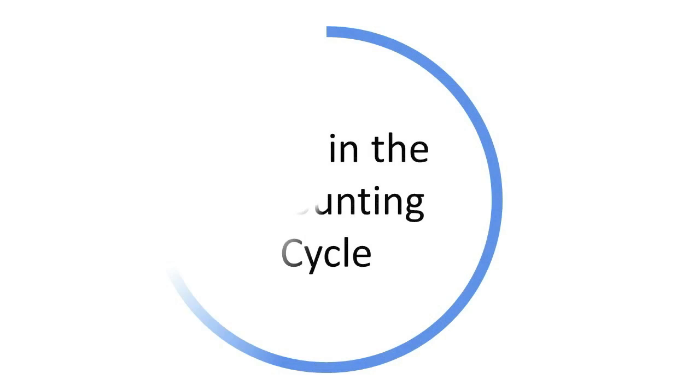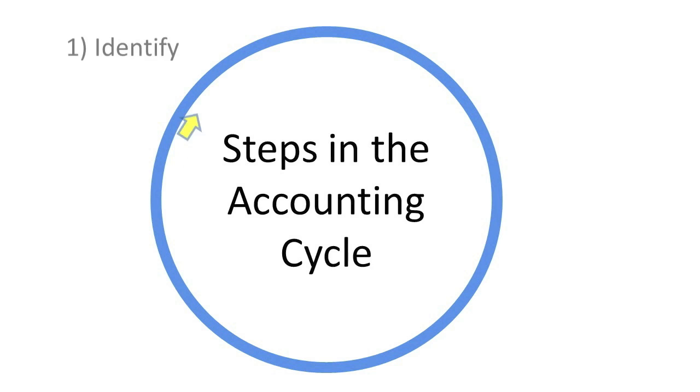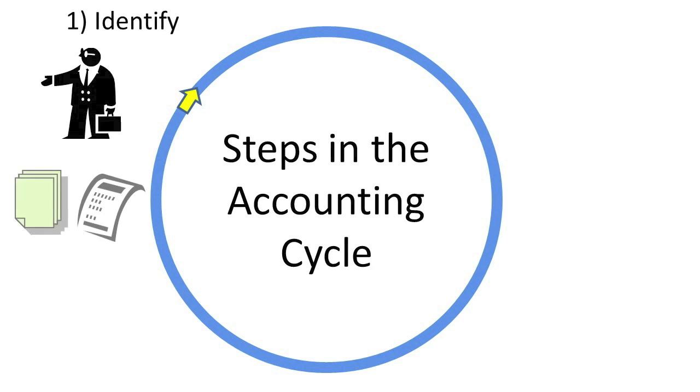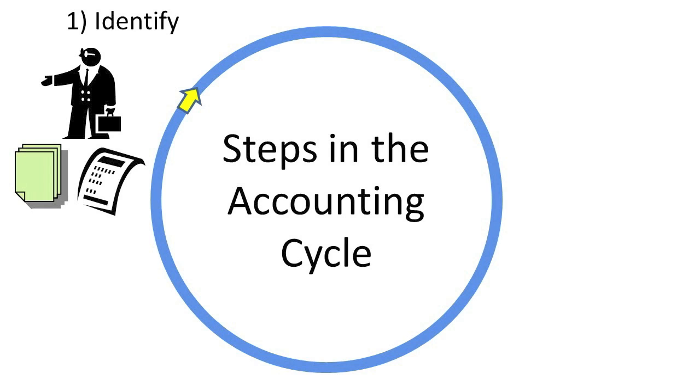Five key steps in the accounting cycle are as follows. First, identify economic transactions and the related source documents to help determine what accounts need to be updated.